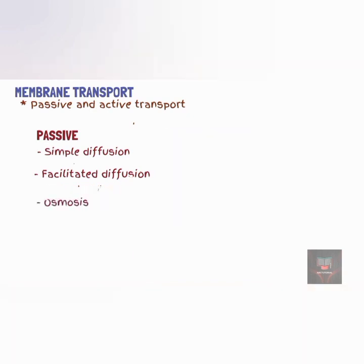Osmosis is a type of diffusion in which there is net movement of a solvent through a selectively permeable membrane. Like other types of diffusion, osmosis is a passive process. The solvent is usually water, which moves by osmosis across the plasma membrane from an area of high water concentration to an area of low water concentration. During osmosis, water molecules pass through the plasma membrane either by moving between the phospholipid molecules or by moving through specific channels referred to as aquaporins.